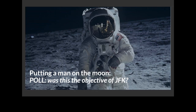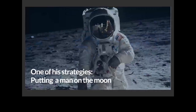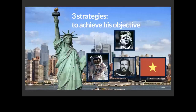Most of you are right — putting a man on the moon was not the objective of JFK. His real objective was making Americans proud again. That was what he had to do in the Cold War. He had several strategies: one was putting a man on the moon, but he also had Cuba and Vietnam. So there were different strategies to make the Americans proud again.